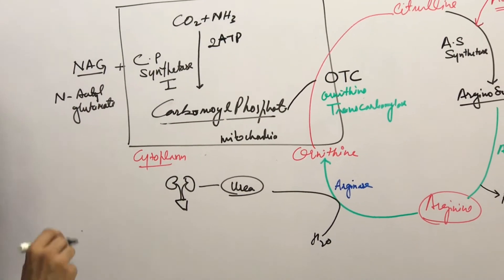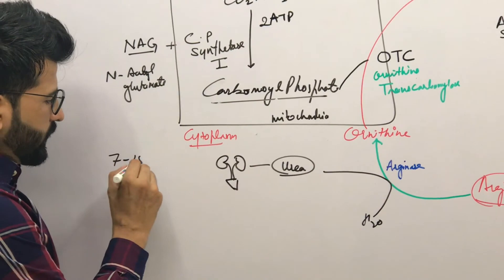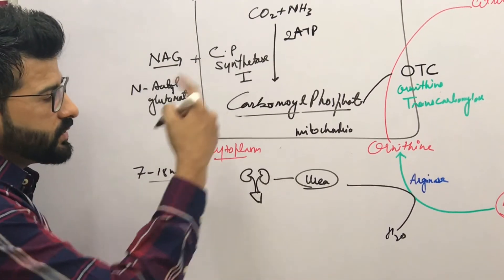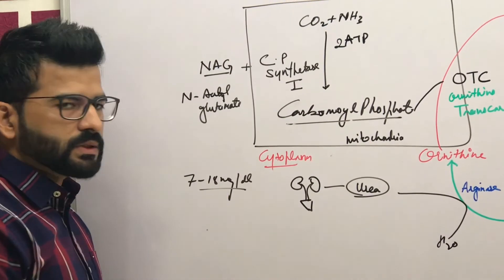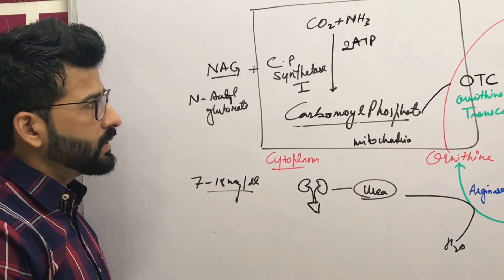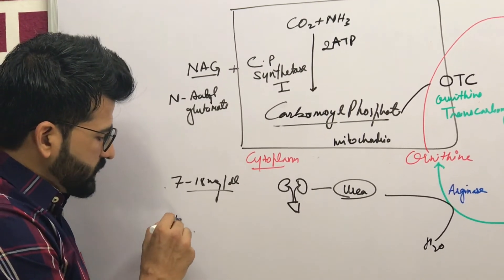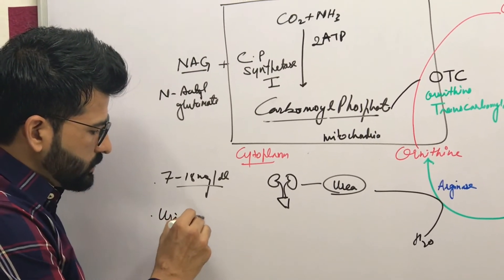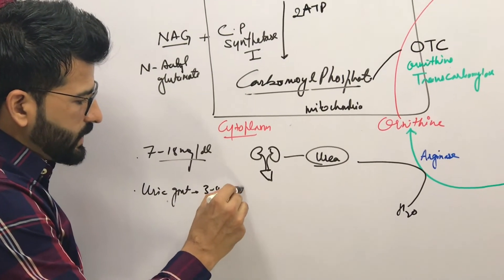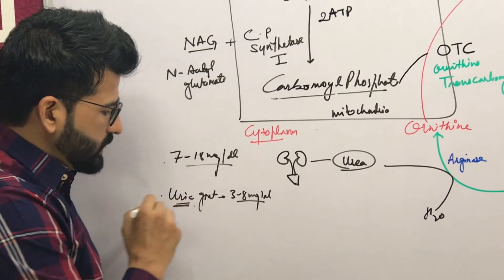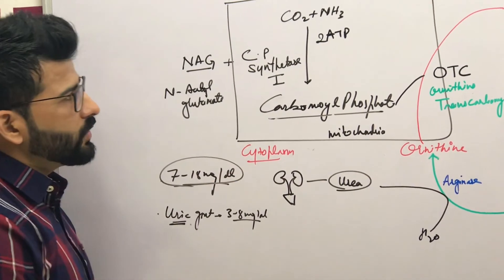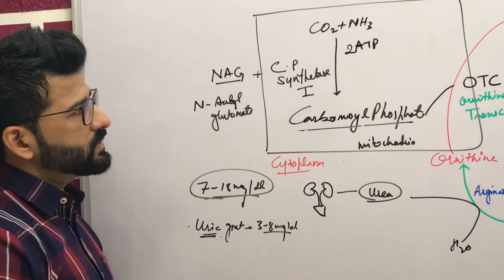The normal value of urea is 7 to 18 milligrams per deciliter. Don't confuse urea with uric acid — uric acid is important in the purine pathway. The value of uric acid in the body is 3 to 8 milligrams per deciliter, and excess uric acid causes gout.